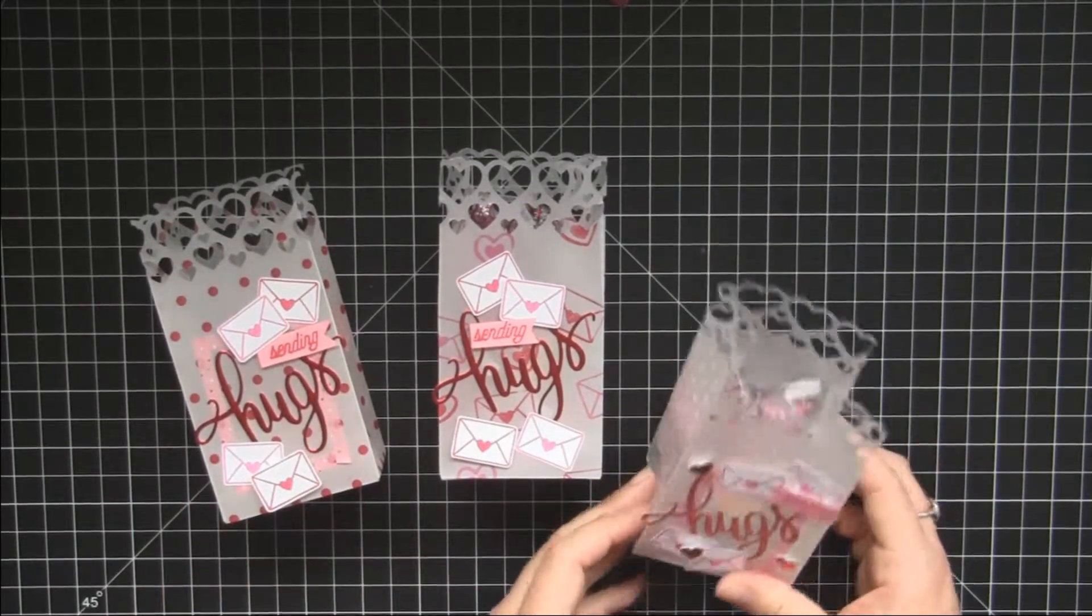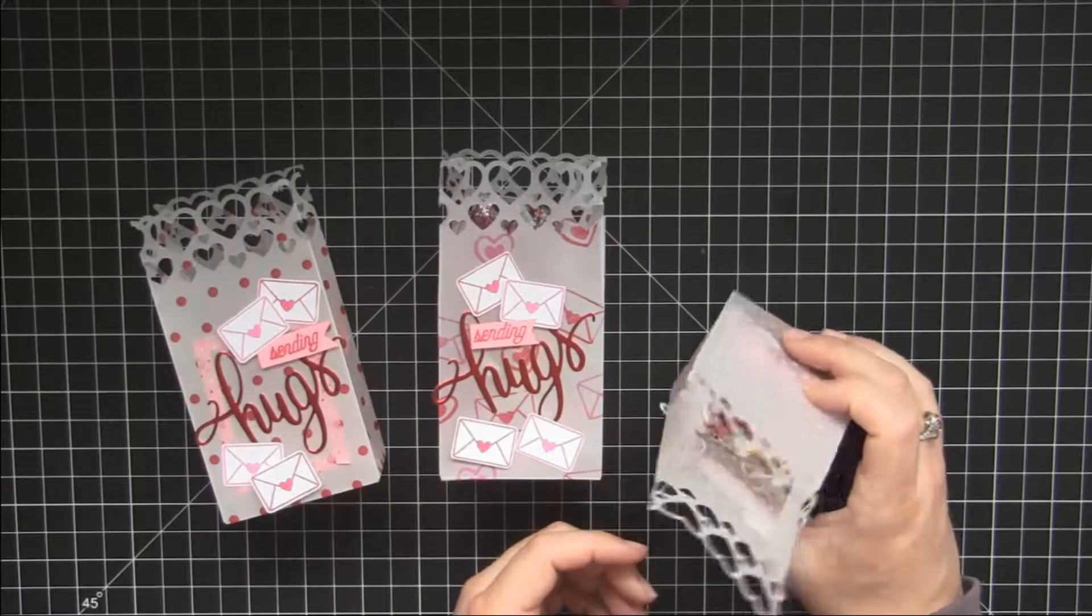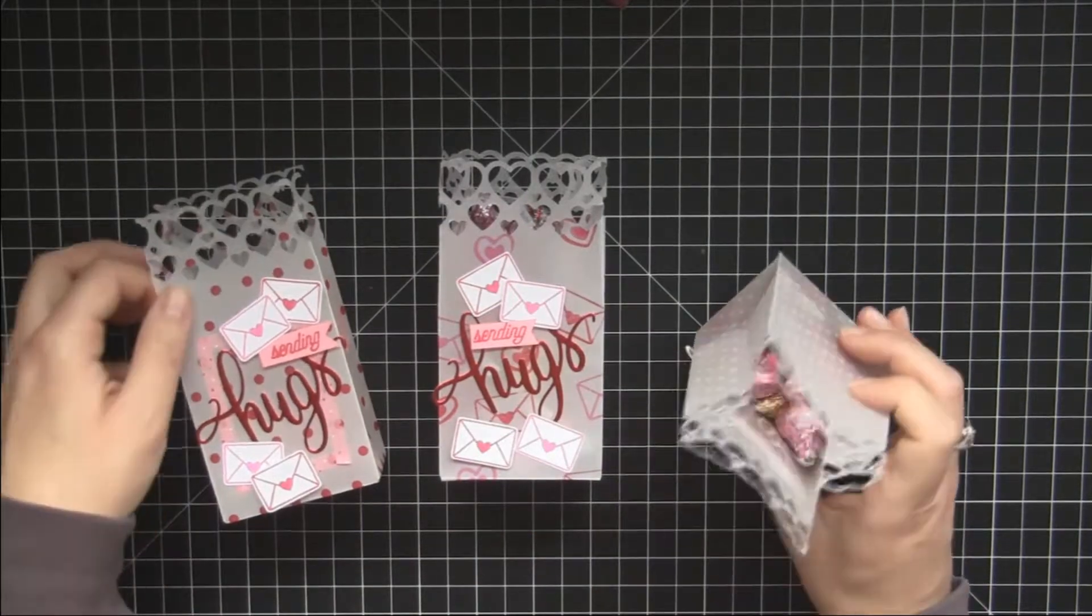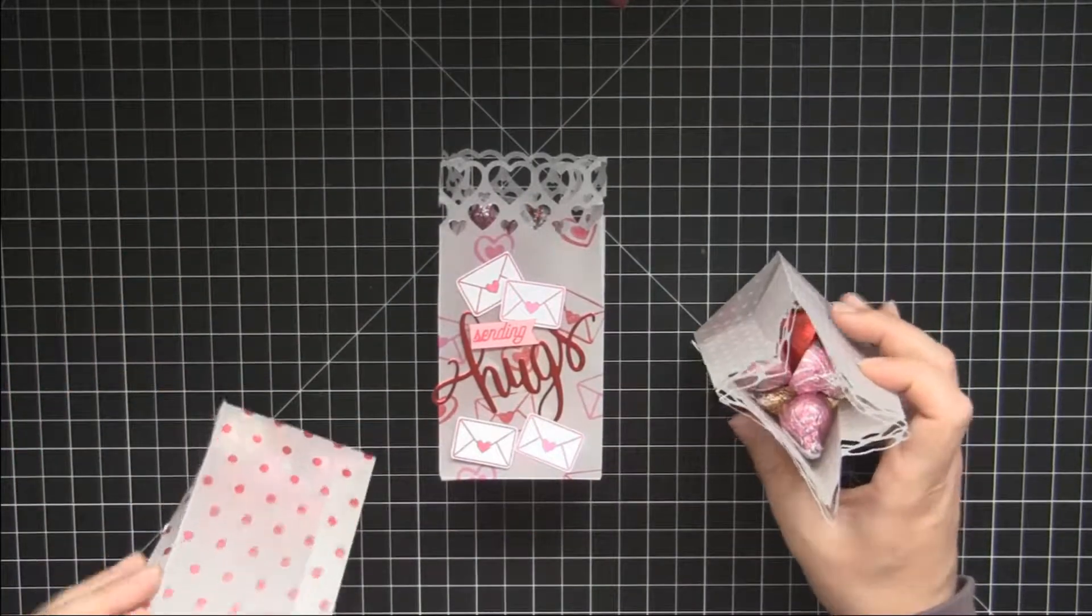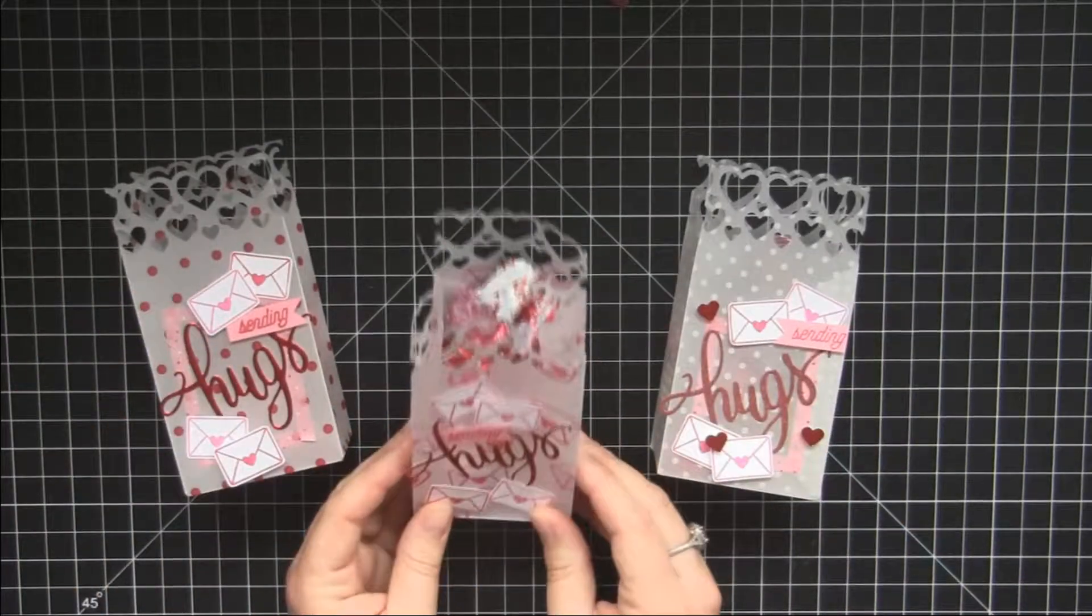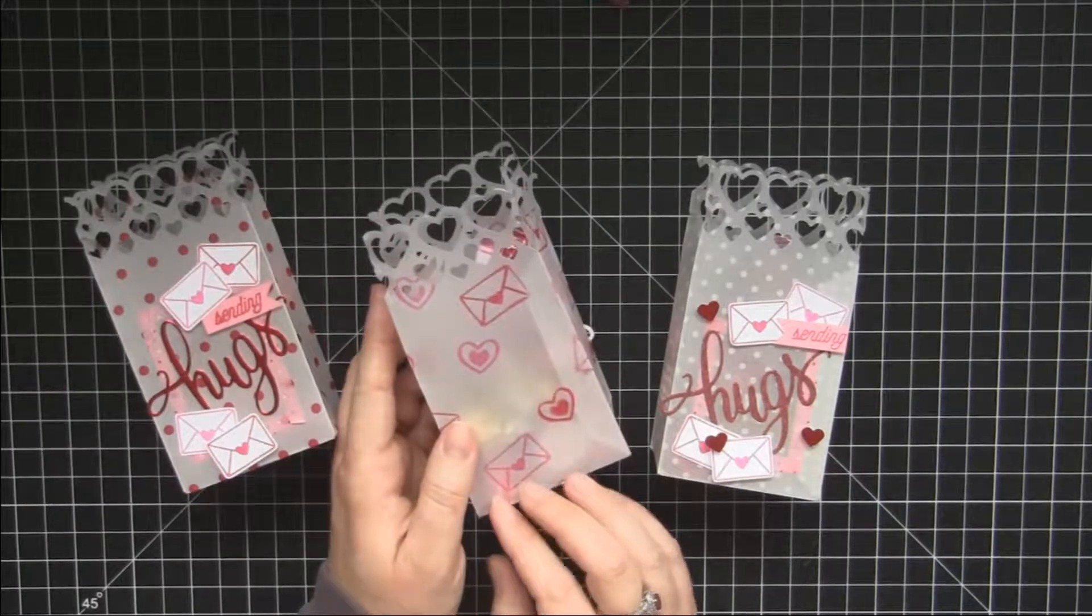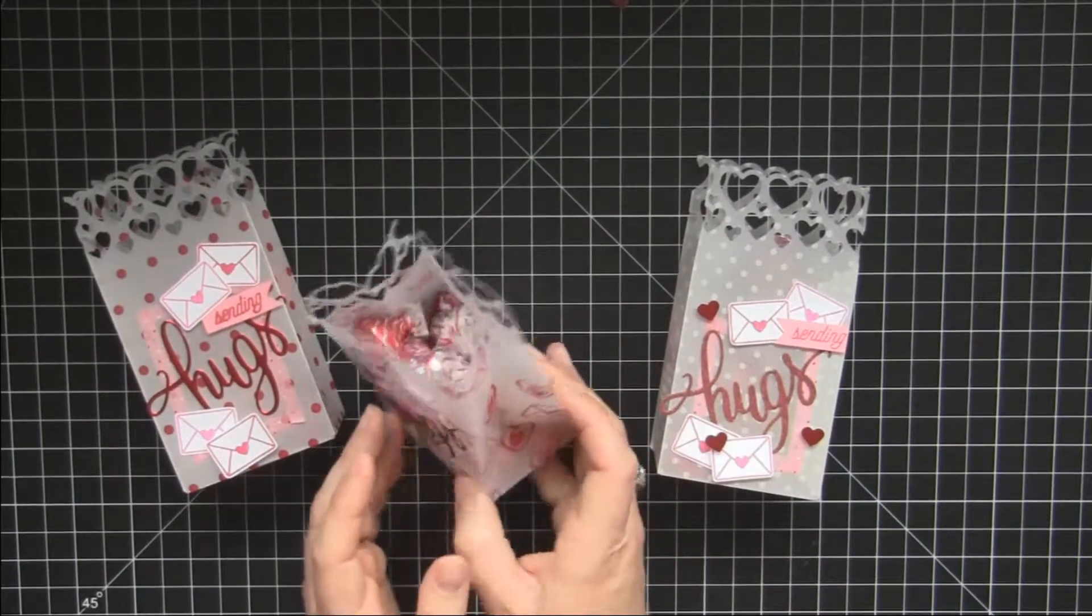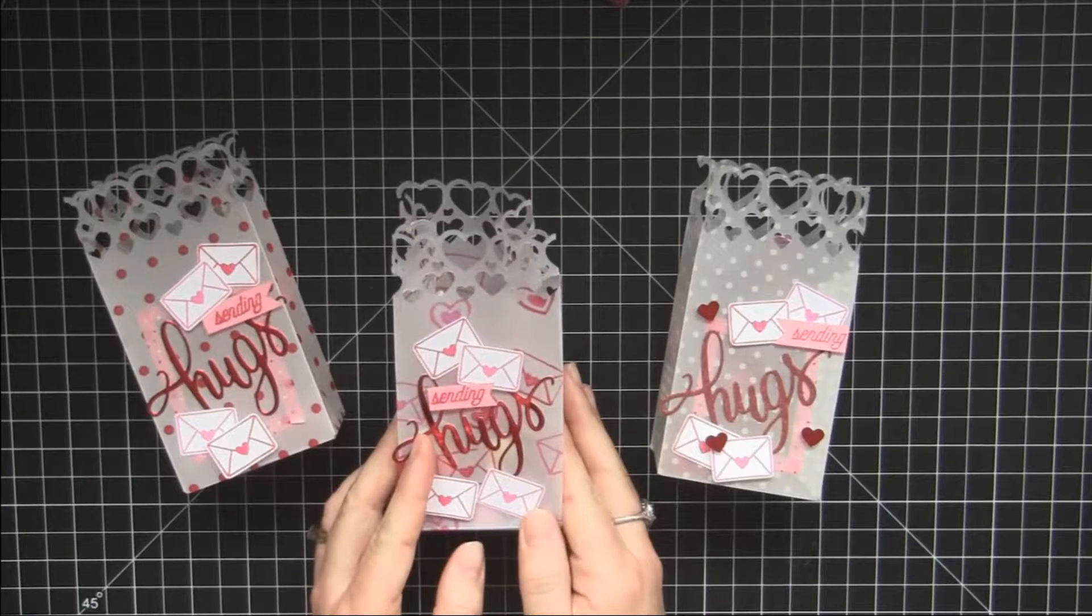I actually had some vellum in my stash with white polka dots and red polka dots, and then I actually made this one by just stamping some Valentine's Day stamps on top of just plain vellum.